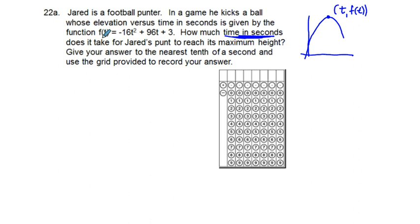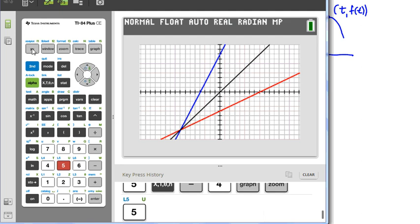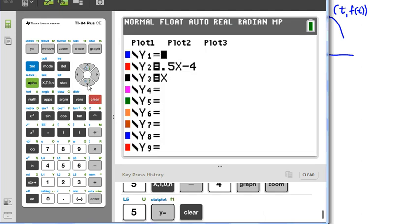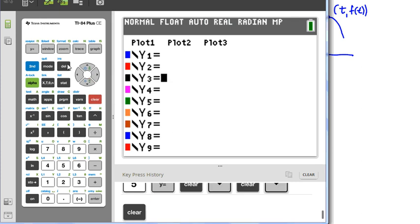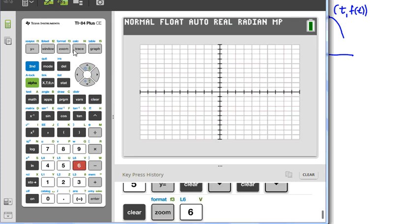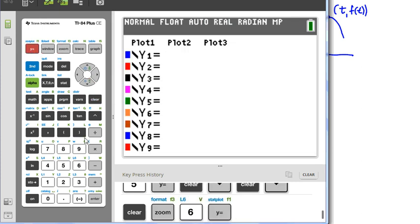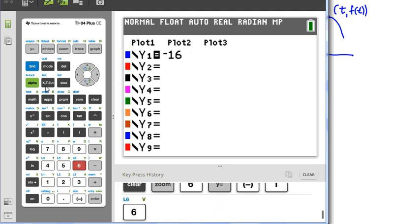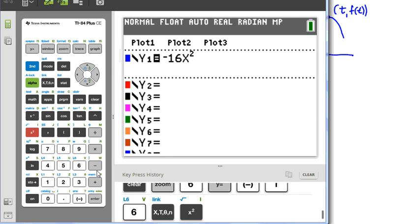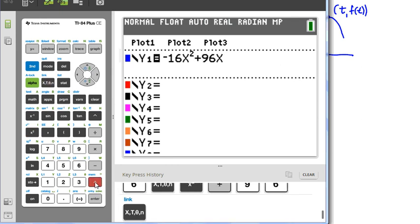All we have to do is put this in our calculator. We're going to clear these functions out, go to 6 to get the standard window. We have negative 16t squared plus 96x plus 3, and we graph the ball.